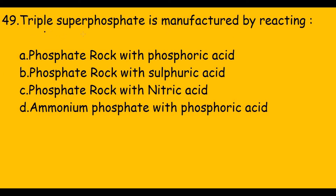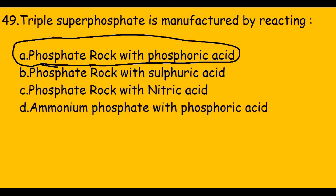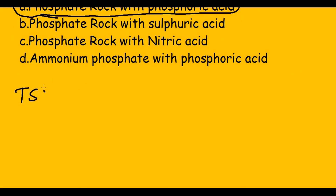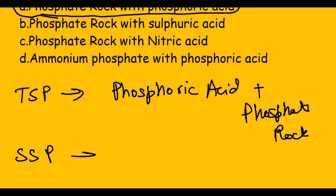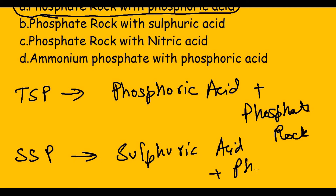This question asks: triple super phosphate is manufactured by reacting — the answer is phosphate rock with phosphoric acid. Remember: triple super phosphate uses phosphoric acid plus phosphate rock, and for single super phosphate it is sulfuric acid with phosphate rock.